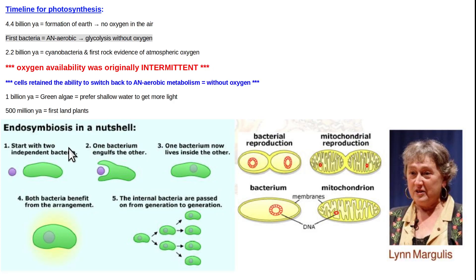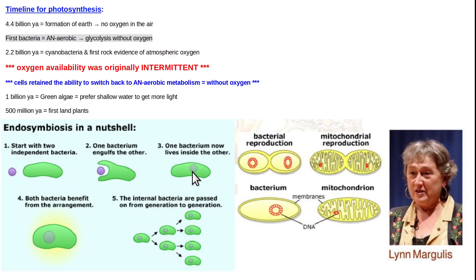Endosymbiosis: 'endo' means inside, 'symbiosis' means mutually beneficial. A large bacterium engulfed a smaller mitochondrion — phagocytosis means to eat another cell. Typically when something is phagocytized, it gets degraded by enzymes. But in this case, the mitochondrion survived inside the larger bacterium and kept producing a lot of ATP, which benefited the larger bacterium.